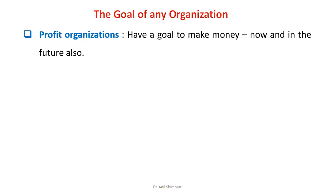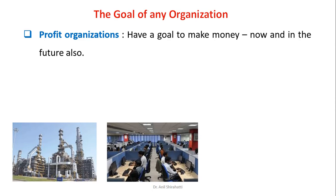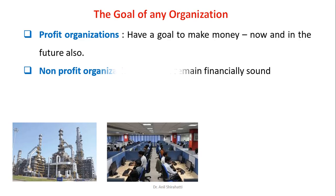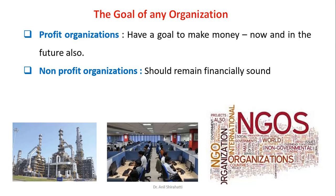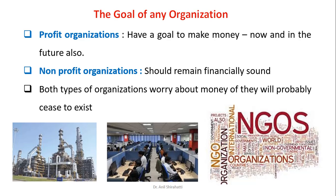What are the general goals of any organization? An organization may be of two types: a profit organization or a nonprofit organization. A profit organization — whether a manufacturing industry or a service industry — its goal is to make money now and also in the future. But a nonprofit organization also needs money so that they can run their business; it may be an NGO. In both types of organizations, if money is not there, they probably cease to exist.